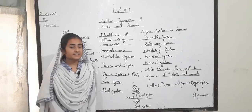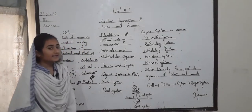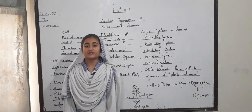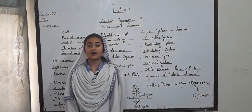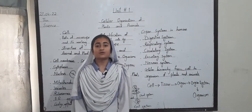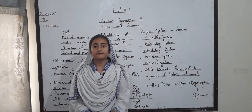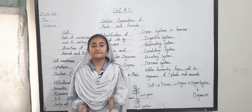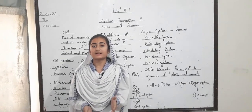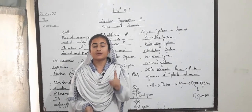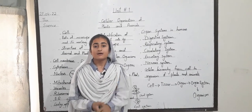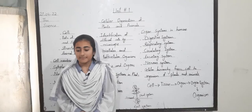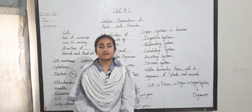First we discuss about cell. Cell is the basic structural and functional unit of all living organisms. Cell is the basic unit of life. All things are made up of cells, but some plants and animals are made up of only one cell. For example, bacteria. Cell gives a human body its structure.